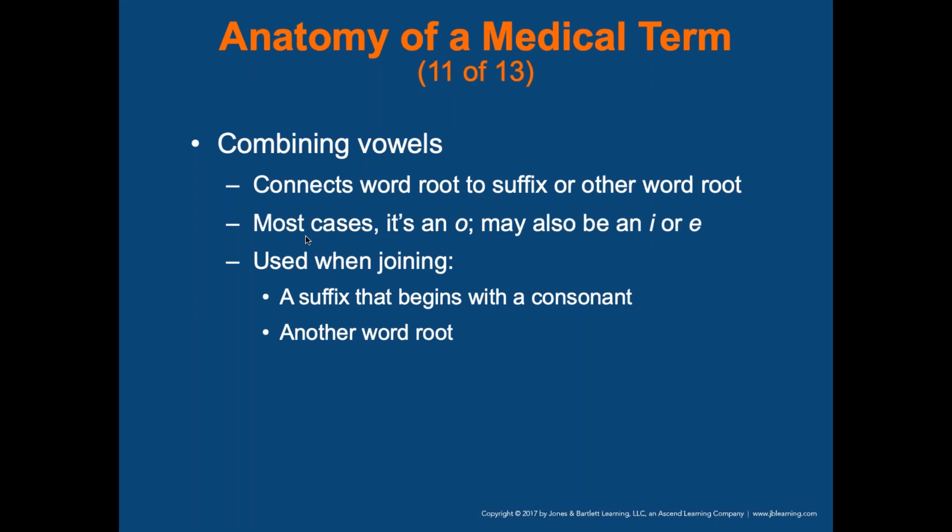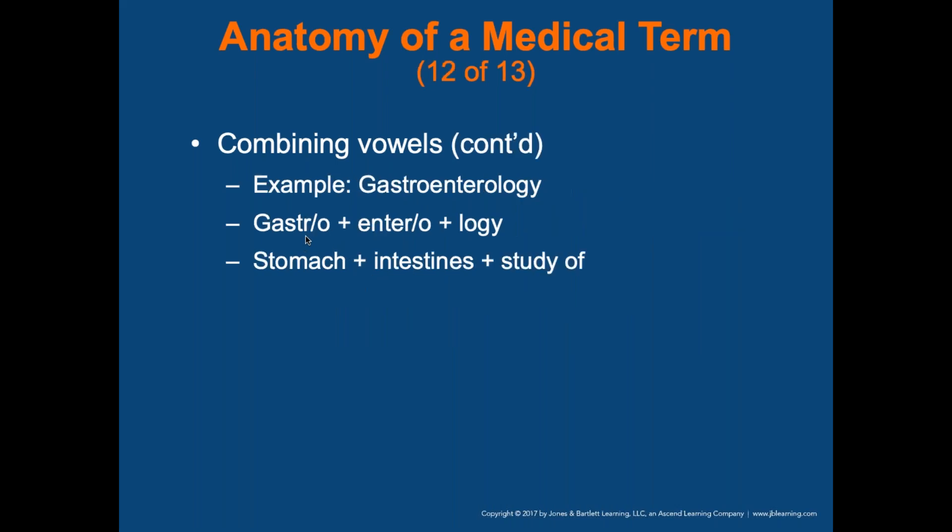Combining vowels just connect root words to suffixes or other root words — in most cases it's an 'O.' For example, 'gastroenterology': 'gastro' is the GI system, 'entero' means intestines, and '-logy' means the study of. So gastroenterology is the study of the GI tract. A gastroenterologist would be a person who studies the gastrointestinal system as a profession.